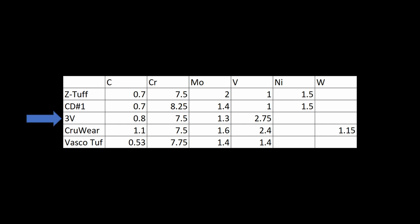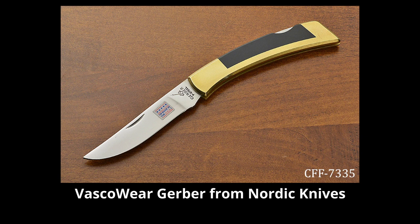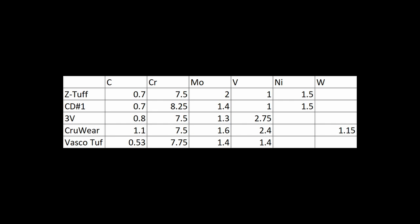CPM 3V is a powder metallurgy version of Vasco Die, which I think is not largely known. Vasco Wear was another common one. CPM Cruwear is a CPM version of Vasco Wear. Vasco Wear got some use in knives in the late 70s and 80s from knife makers like Ted Dowell, and also Gerber, the knife company. It was making knives with Vasco Wear in the late 80s, like 87. There's another version of the steel called Vasco Tuff, which is maybe the closest to what Z-Tuff and CD#1 ended up being.